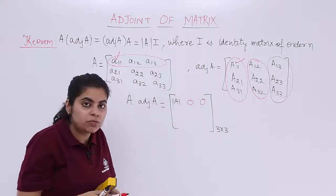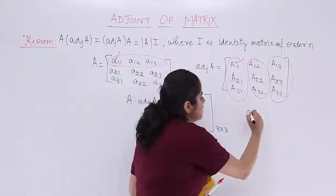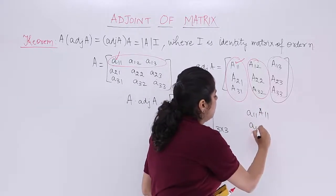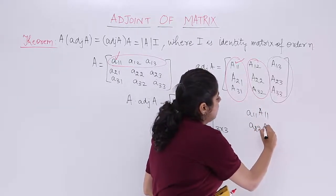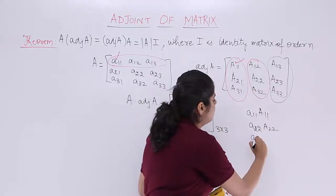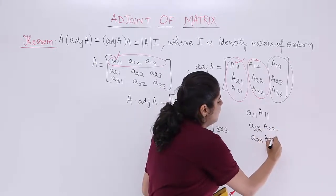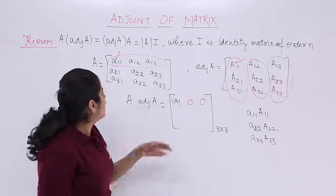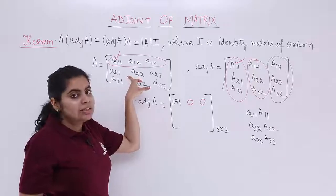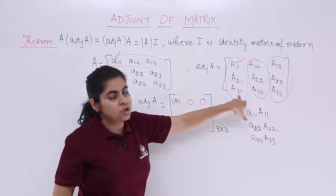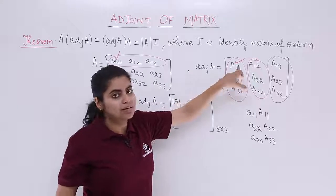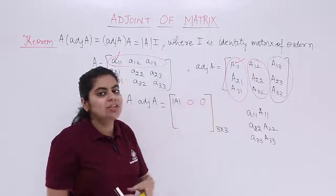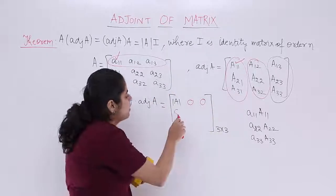We get determinant of A only in three cases: the (1,1) position with A11×A11, the (2,2) position with A22×A22, and the (3,3) position with A33×A33. In all other cases we get 0. For the second row and first column: a21·A11 = 0, a22·A21 = 0, a23·A31 = 0 — giving 0 again.